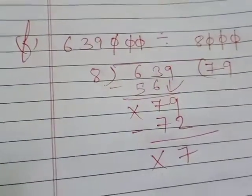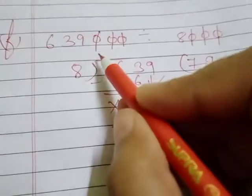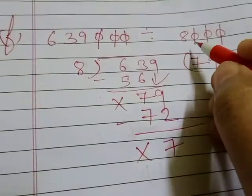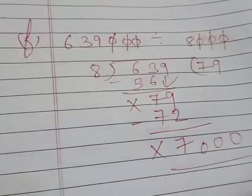Now what we have to do: whatever zeros we have cancelled, those cancelled zeros will be shifted downside. How many zeros are cancelled here? One, two, and three. So one, two, and three like this. F is done.